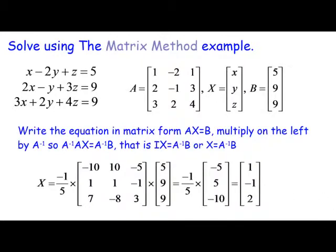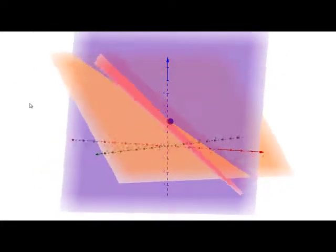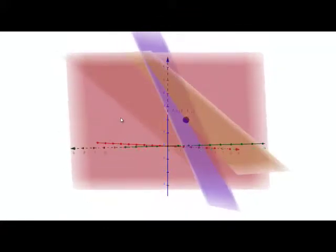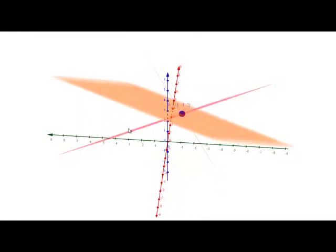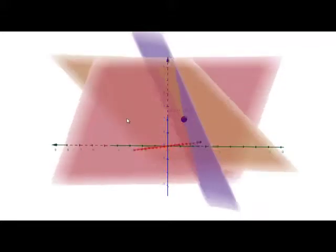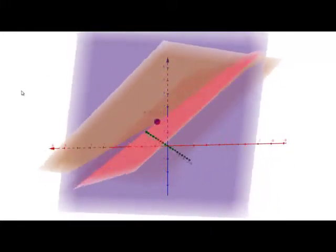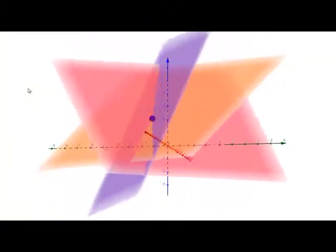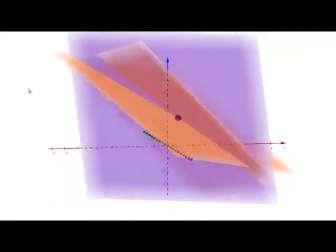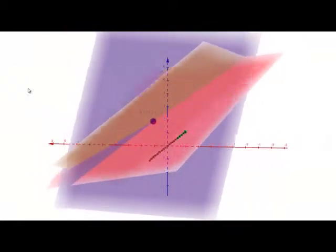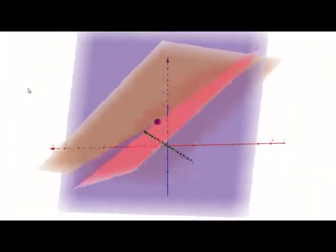Now what does this look like geometrically? When we have a unique solution, I'll put in a graph. You can see these three planes all intersect at one point — that's the unique solution. This system of linear equations has a unique solution, but it doesn't always. Sometimes there may be no solution at all, or the planes may all intersect on a line, giving infinitely many solutions. We'll be looking at Gaussian reduction in the next video to handle cases without a unique solution. Thanks for watching.